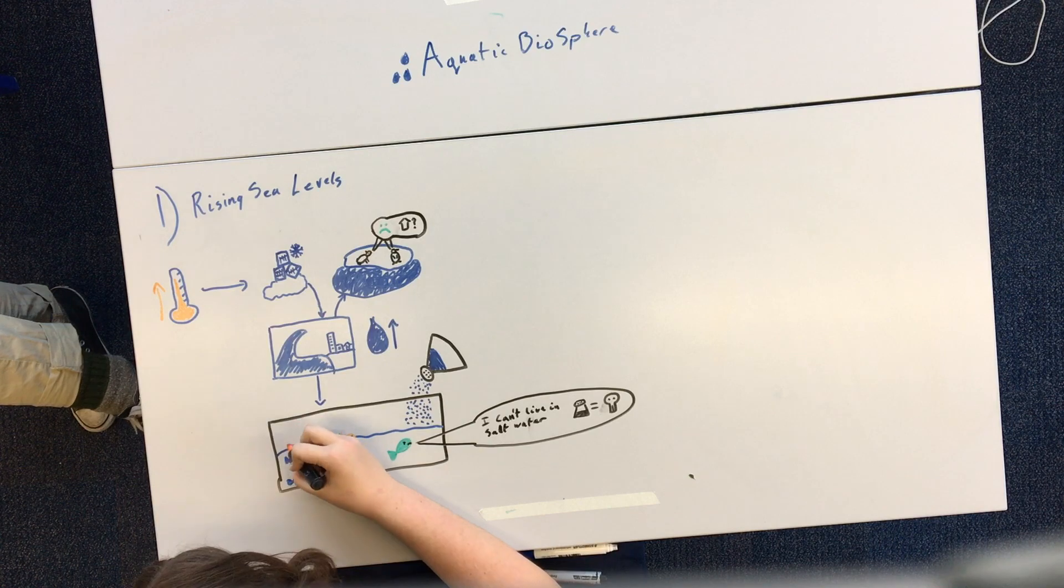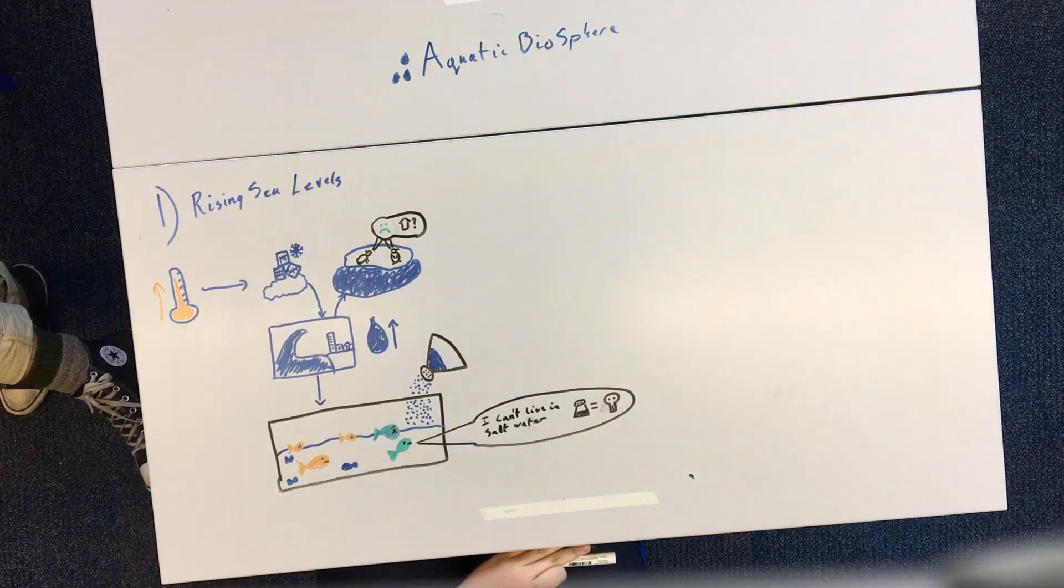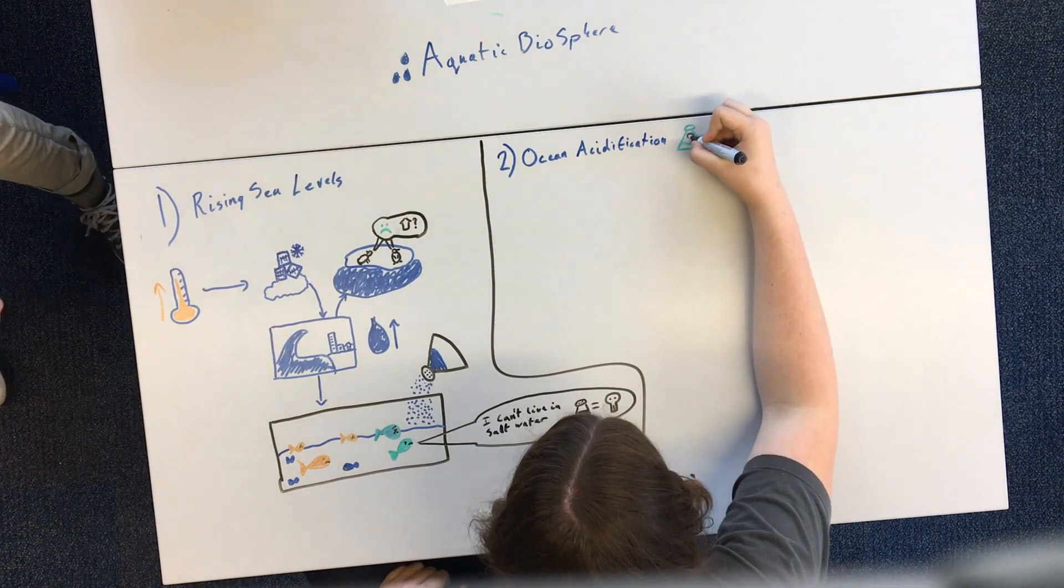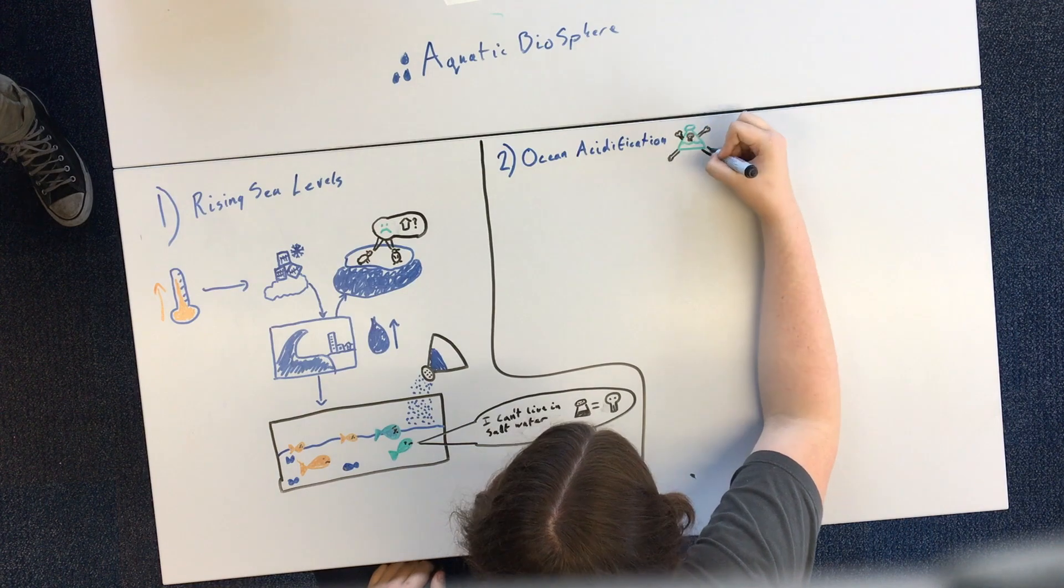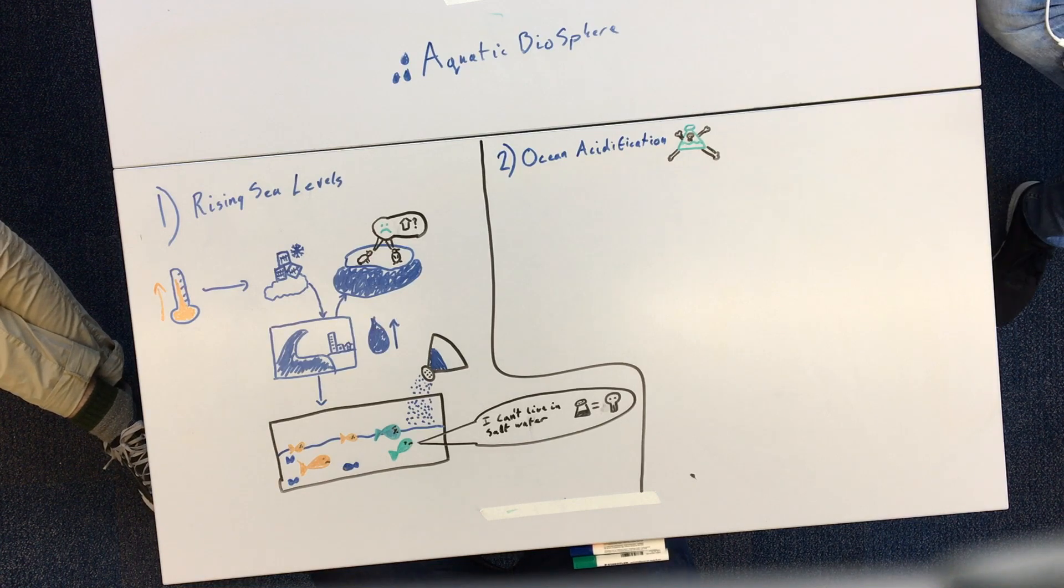Another problem we're facing with climate change and the increased deposits of CO2 in the atmosphere is ocean acidification. Ocean acidification results from increased levels of carbon in the ocean, obviously. Now this carbon can come from several sources, as we've already learned.